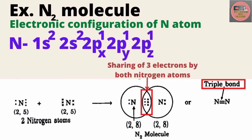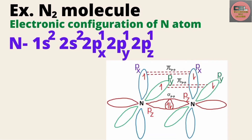When these come close to another nitrogen atom having electrons of opposite spin, they overlap. The 2pz orbital of one nitrogen atom overlaps with the 2pz orbital of another atom coaxially, forming a sigma bond. When the 2px orbital of one nitrogen atom overlaps with the 2px orbital of another atom sideways, a pi bond forms.